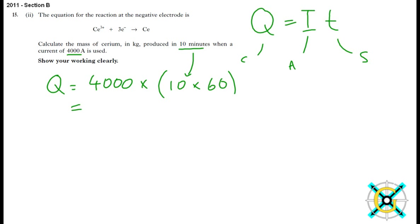So we have a number of coulombs. So I'm just going to write that. The number of coulombs 2,400,000.